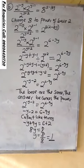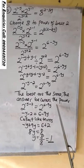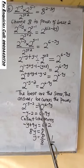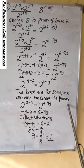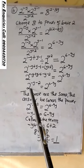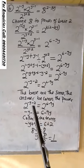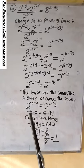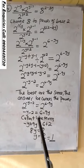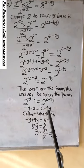The bases are the same. So, the power becomes the answer. Since the bases are the same, pick the power as the answer. So, you have what? Minus y minus 2 equals to 6 minus 9y.